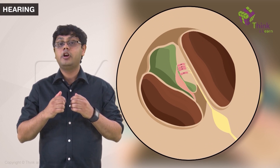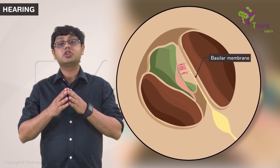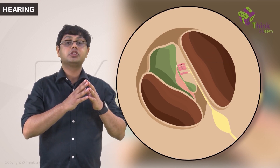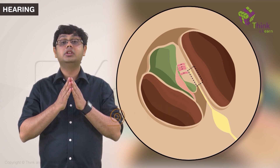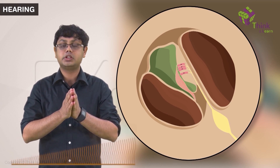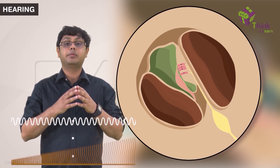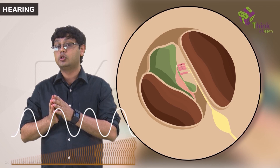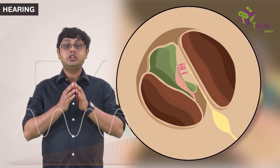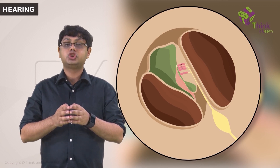The pressure waves in the perilymph cause movement of the basilar membrane because of the way in which the basilar membrane is designed. The waves cause the greatest movement in the portion of the basilar membrane meant for its specific frequency. The basal portions of the membrane are more responsive to higher pitches, and the apical portions are more responsive to lower pitches. The point of maximum amplitude of movement helps us determine pitch.